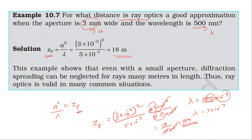The Fresnel distance is 18 meters. This example shows that even with a small aperture, diffraction spreading can be neglected for rays traveling many meters. In the same way, this is valid in many common situations.